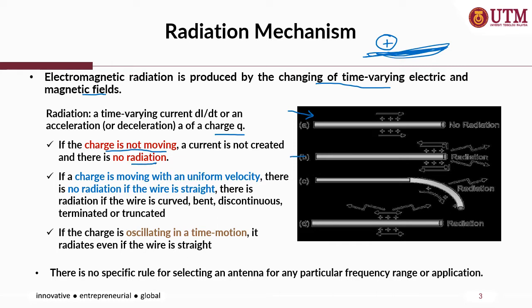However, for the same straight wire structure, if there is charge moving but with uniform velocity, there is still no radiation if the wire remains straight. However, if the same wire is then bent or truncated and the charge is moving with uniform velocity, radiation exists.